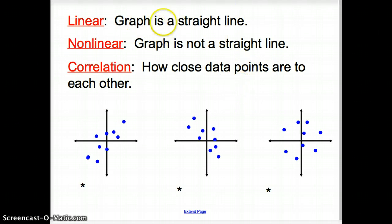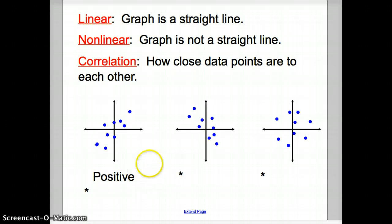Next, we have some more vocab words. We have linear, which is a graph of a straight line. Nonlinear is a graph that is not a straight line. And now, correlation is how close the data points are to each other. When we are asked if this is a positive or negative or no correlation, it's depending if you can see a trend in the data. So, there would be a correlation to this data. And what kind of correlation would it be? It would be a positive correlation. How about this data? Since it is going down from left to right, it would be a negative correlation. And now, can you see any pattern here? Is it going down? Is it going up? Is it going sideways? Well, I can't really tell.